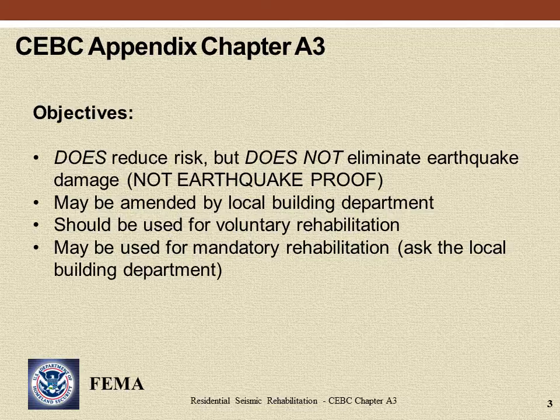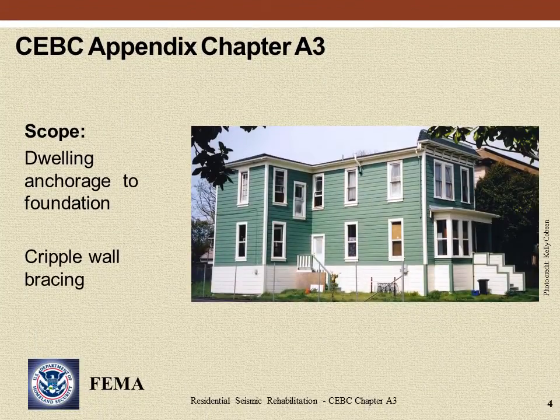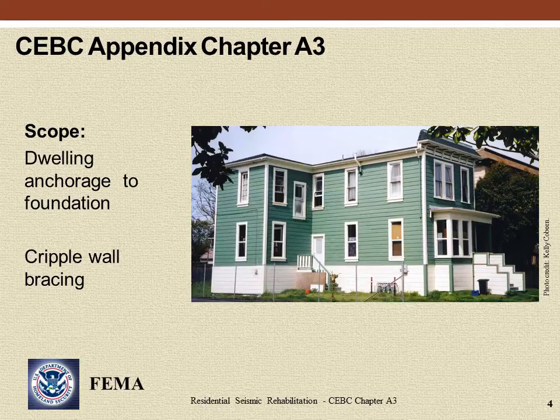Check with the Local Building Department to see if they have amended the Local Building Code provisions or have adopted local ordinances or rehabilitation measures that are applicable. Use of CEBC Appendix Chapter A3 is primarily intended for voluntary seismic rehabilitation, but may also be determined appropriate by the Building Official when mandatory seismic rehabilitation is required. CEBC Appendix Chapter A3 addresses Vulnerability A: Anchorage of Wood Framed Dwellings, and Vulnerability B: Cripple Wall Bracing where applicable.